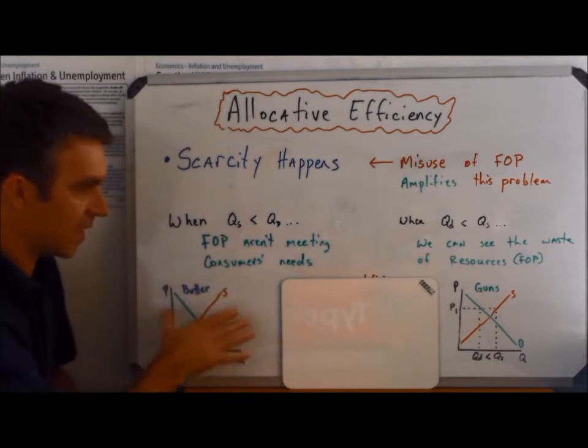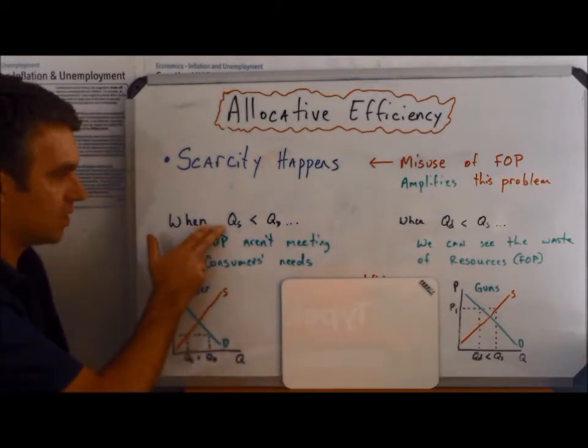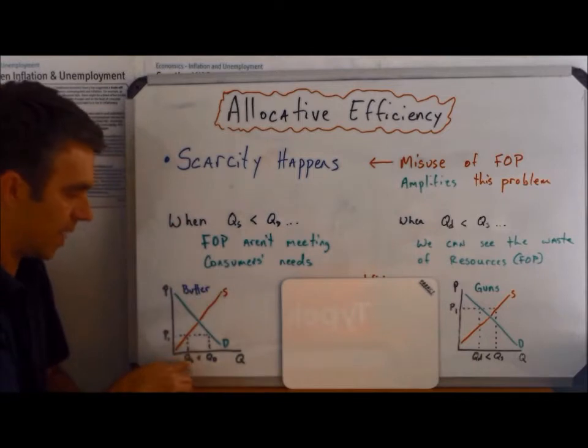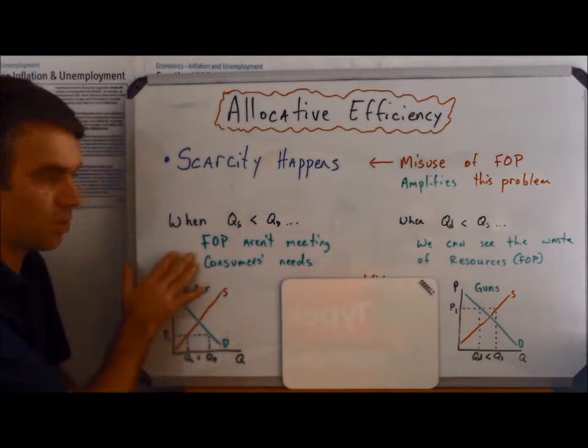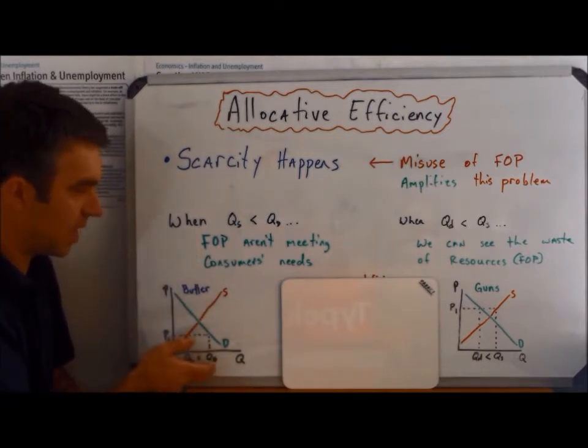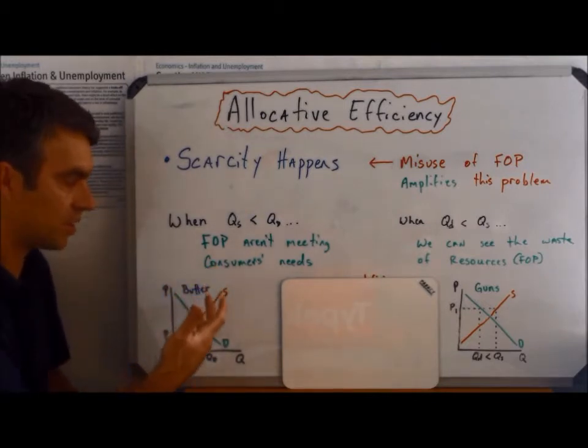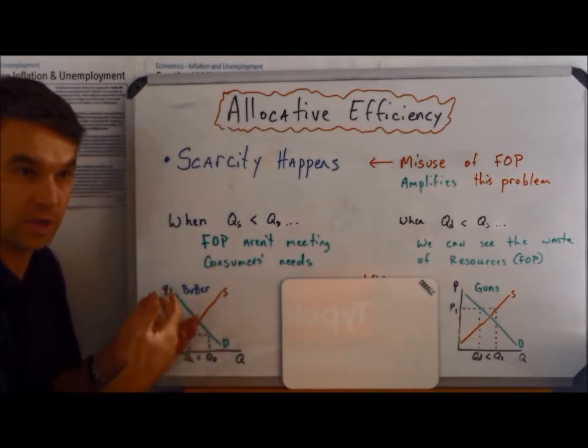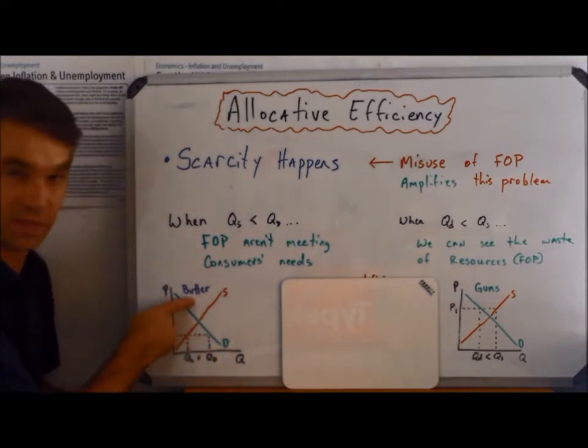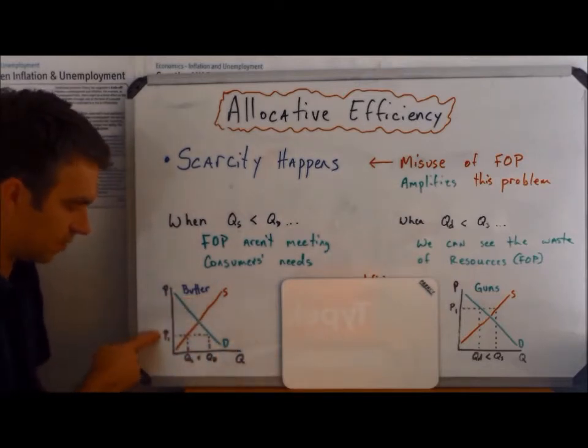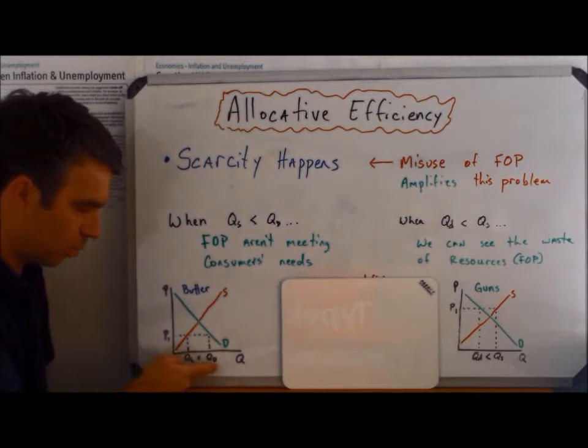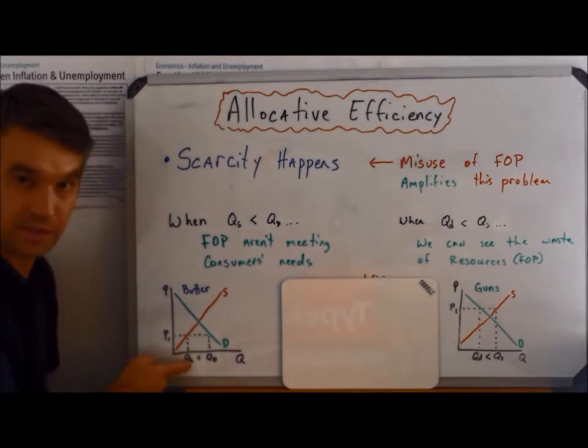We can see this on demand and supply, and let's look when quantity supplied is less than quantity demanded. So what we can say is that the demanders, the consumers, are saying, wait, those factors of production, we want you to use them in a way that supplies, in this case, more butter. What we're saying is that at this price, more demand exists than supply.